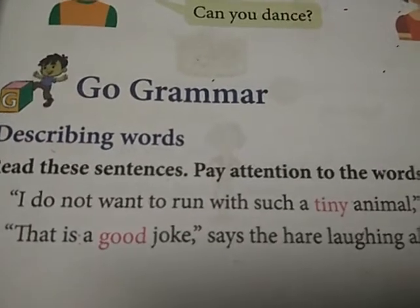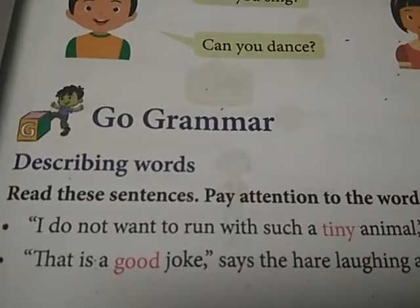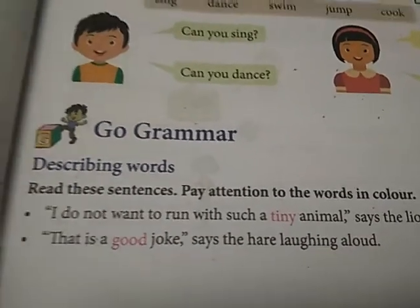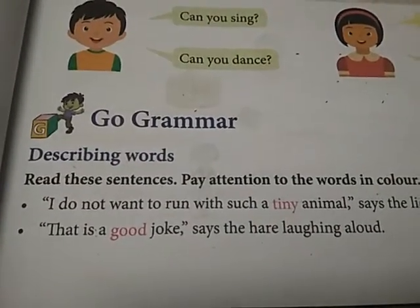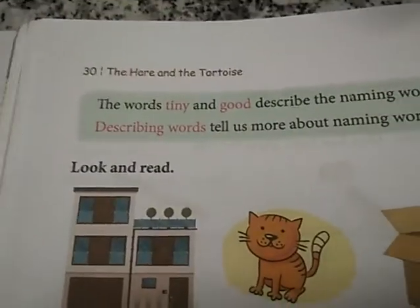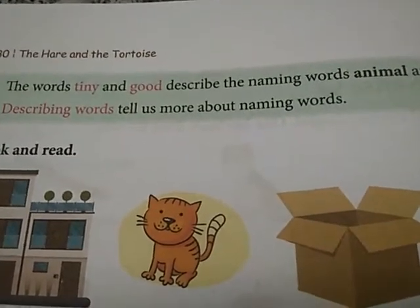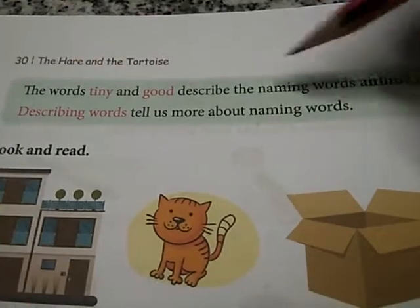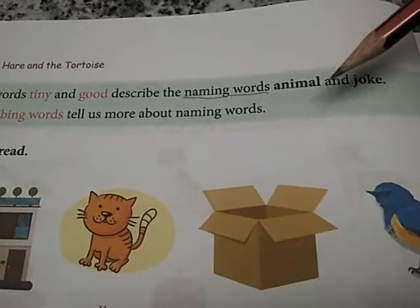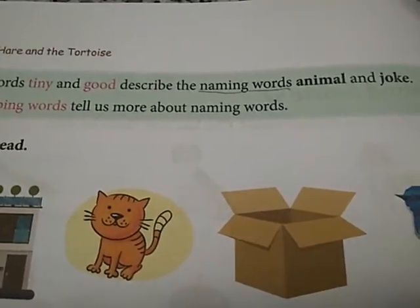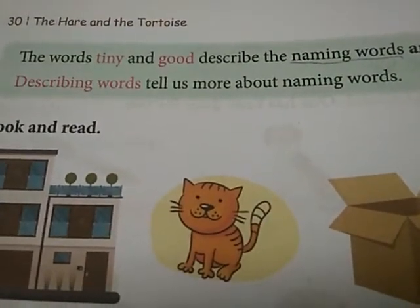I do not want to run with such a tiny animal, says the lion. That's a good joke, says the hare laughing aloud. Dekhi hai — tiny. Good. Kya describe kar raha hai? See, beta, the words tiny and good describe the naming words. Naming words to aap ko pata hain — naming words hote hain nouns. Jaise ki animal and joke — ye kya hain? Noun hain. To inko describe kar raha hai — kya? Tiny or good.